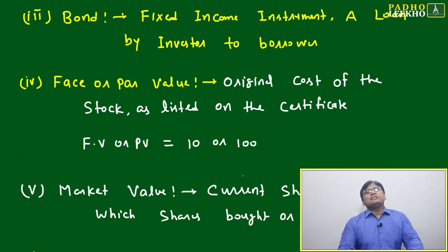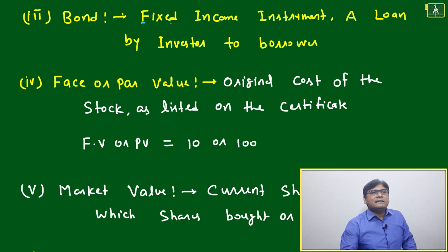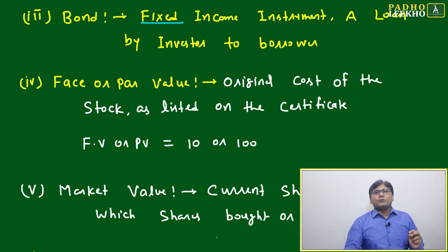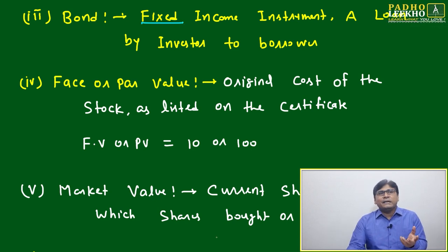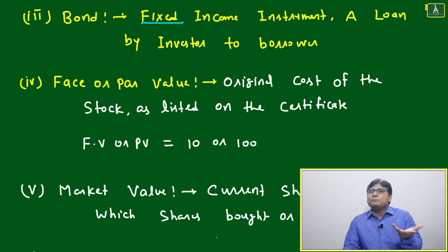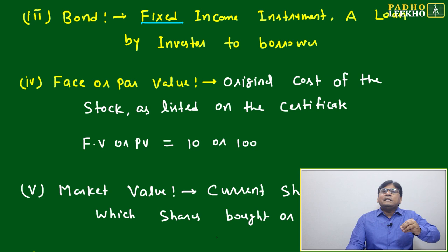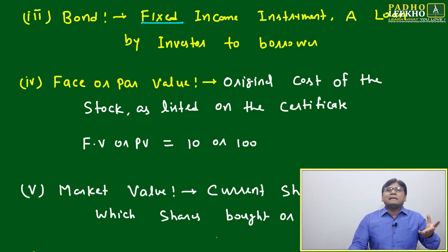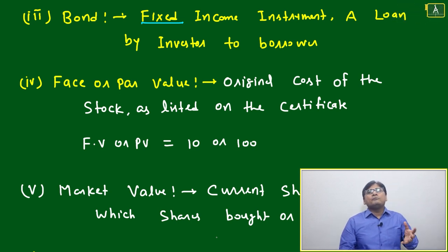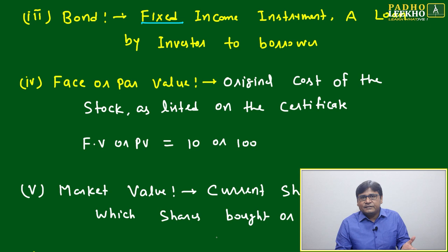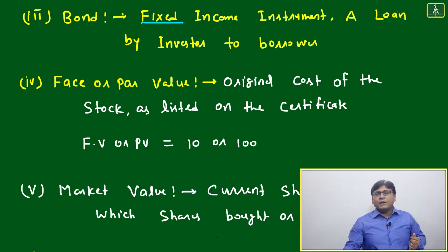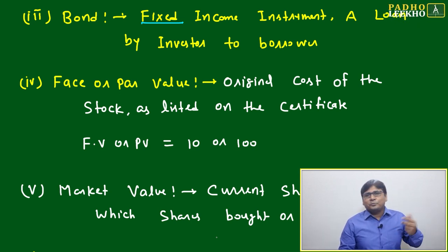A bond is just a kind of loan. The only difference is it is a fixed income instrument — it is a kind of instrument where some fixed income is promised. A bond is just kind of like a share, but it is not given in the form of a company share. It will be given in the form of liabilities.